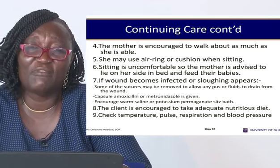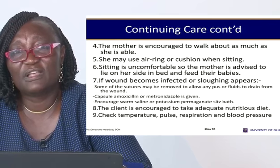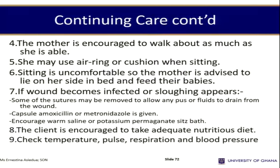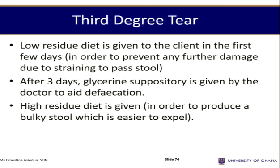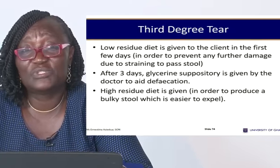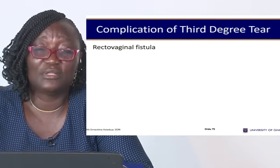The mother is advised to lie on her side in bed to breastfeed, as sitting to feed causes pain in the perineal area. If the wound becomes infected or sloughing appears, some sutures may be removed to allow drainage. Encourage adequate nutritional diet and continue monitoring vital signs. A low-residue diet is given initially; after three days, a glycerin suppository is given if there is constipation. Give a high-residue diet to produce bulky, easy-to-pass stools to avoid straining with sutures.